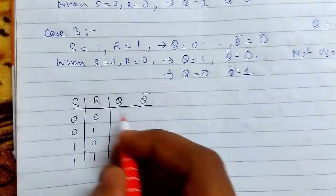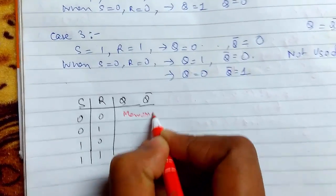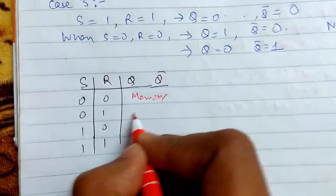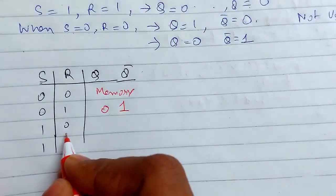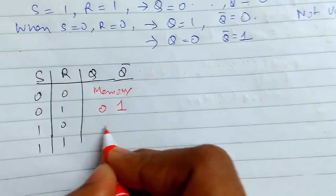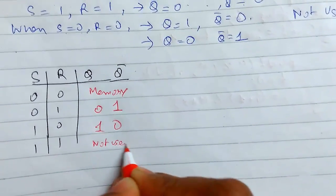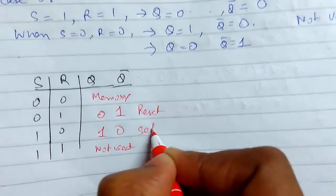Now I will finally construct a truth table for it. For 0, 0 it was memory condition, whatever previous output it remains the same. For 0, 1 it was reset condition. For 1, 0, this was set condition. And for 1, 1 not used. So this is reset, this is set condition.